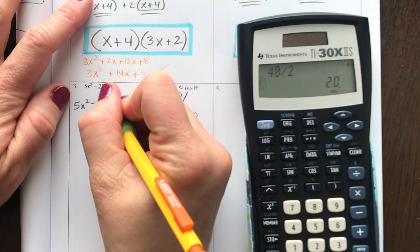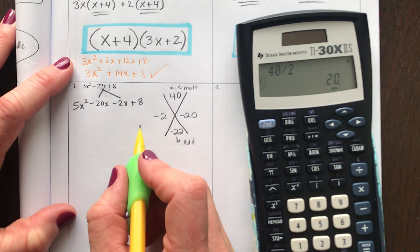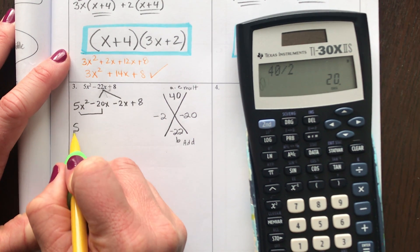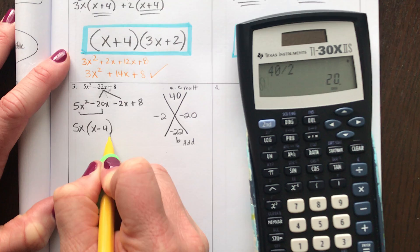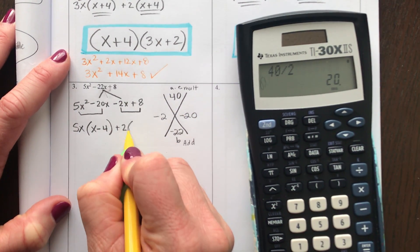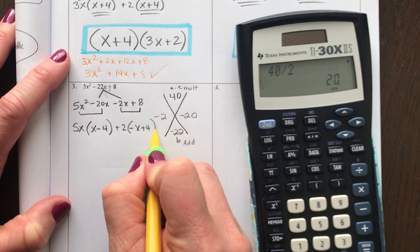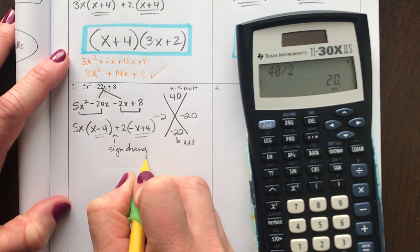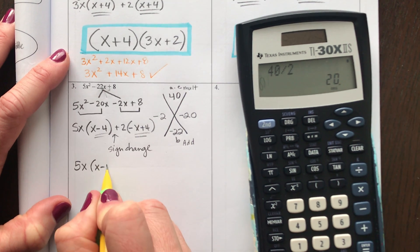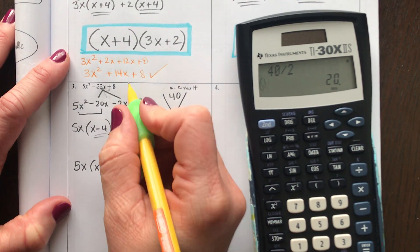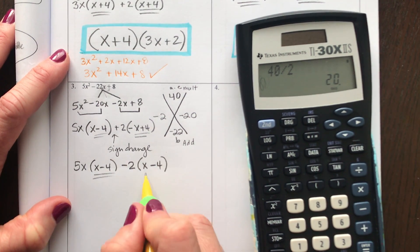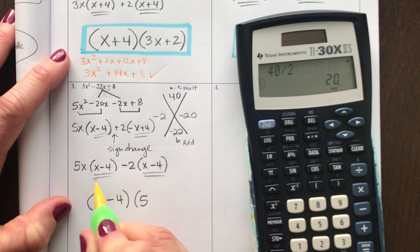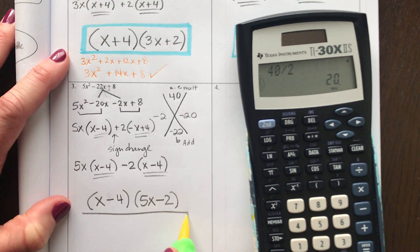Now split the middle method means now we're going to do grouping. So we split the middle, the -22 into two terms, and now we can do grouping. Both of these are divisible by 5 and an x. I'm left with x - 4. Both of these two terms is divisible by 2. And I'm left with -x and a positive 4. Now I notice that these are very similar, but the signs aren't right, which means this sign needs to change. If I took out a -2, this will be a positive x and 8 divided by -2 is -4. Do these match now? Yes. So that's one of your answers. Here's x - 4. And the GCFs come together to make your other factor.